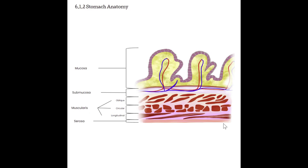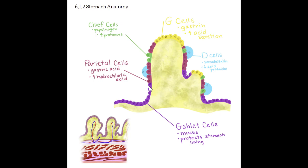Taking a closer look at the stomach wall: the serosa is the very outer layer. Moving in, we get to the three-layered muscularis with longitudinal, circular, and oblique muscles. Moving towards the lumen, we get to the submucosa, which has lymph channels and blood vessels traveling through it. Then we get into the mucosa — the actual stomach lining — where there are specialized cells. Goblet cells are responsible for making mucus, which protects the stomach from basically digesting itself. Goblet cells are the most plentiful and are found along a good portion of the stomach wall.